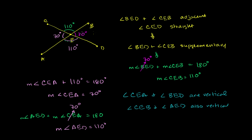So this angle right over here is 110 degrees. If you take any adjacent angles whose outer sides form a straight angle, you see they add up to 180. And if you go all the way around the circle, they add up to 360 degrees: 70 plus 110 is 180, plus 70 is 250, plus 110 is 360 degrees. In the next video, we'll actually prove to ourselves — using the same logic but with generalized numbers, not just 70 degrees — that the measure of vertical angles are always equal.